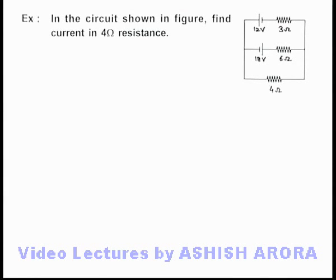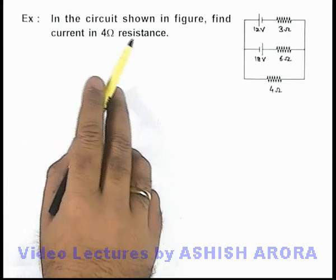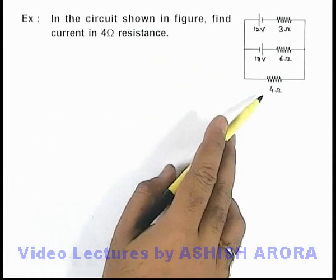In this example, in the circuit shown in figure, we are required to find the current in this 4 ohm resistance.